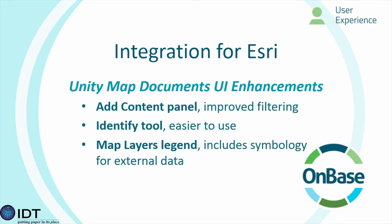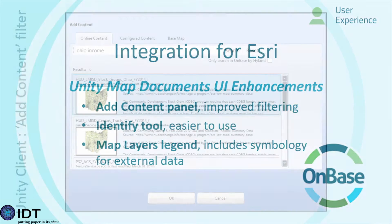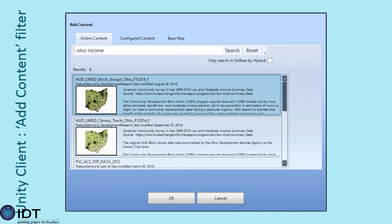We've also made usability enhancements to our Unity Map Documents feature in the areas of the content panel, the add content panel, the identify tool, and the map layers legend. First, let's look at the add content filter. When on a map showing our OnBase documents, we may also want to add external information such as weather data or income information. Using the updated add content filter, users can add multiple sources, add data from tabbed content, search online for information, and navigate through all of this external content, adding multiple pieces at once to the map.